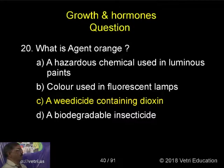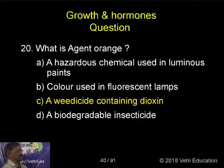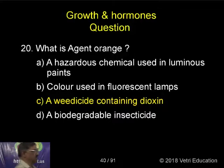What is Agent Orange? Options: a hazardous chemical used in luminous plants, colors used in fluorescent lamps, a weedicide containing dioxin, or a biodegradable insecticide. The correct answer is C: a weedicide containing dioxin.